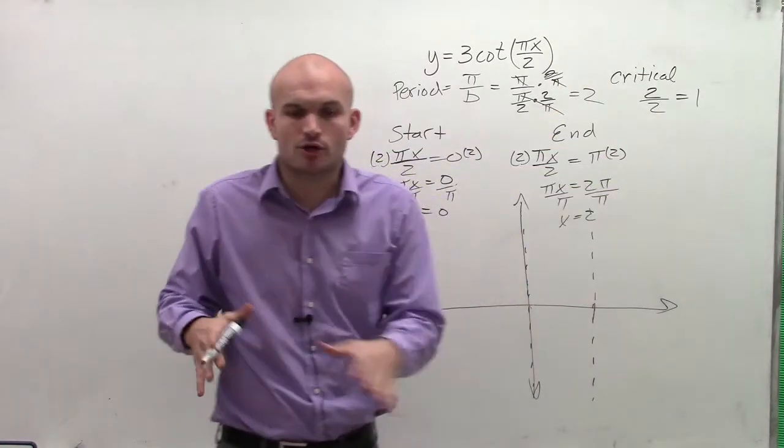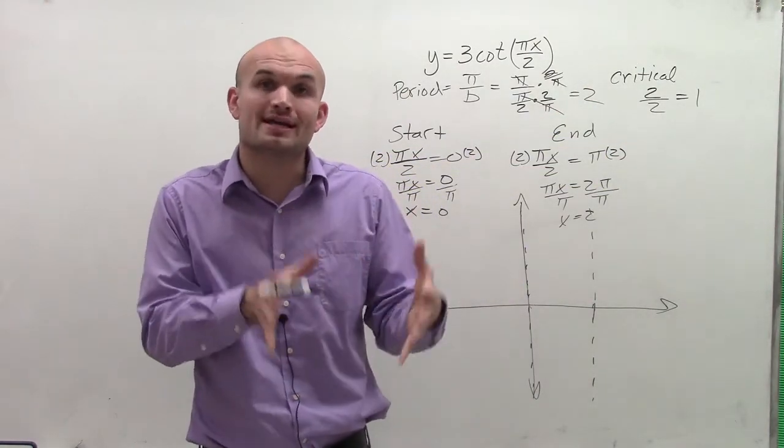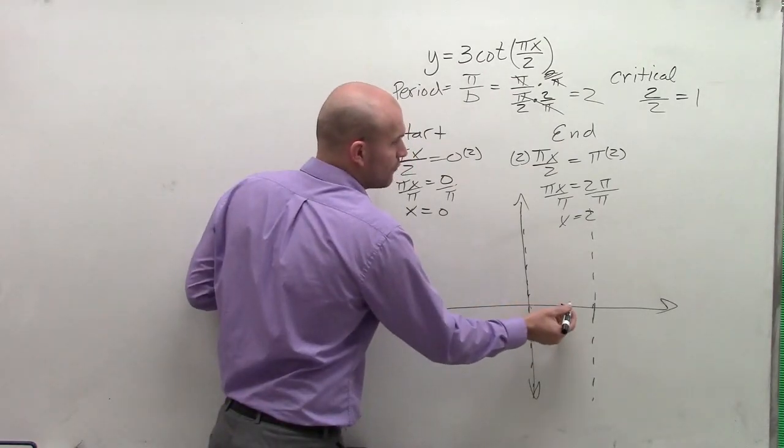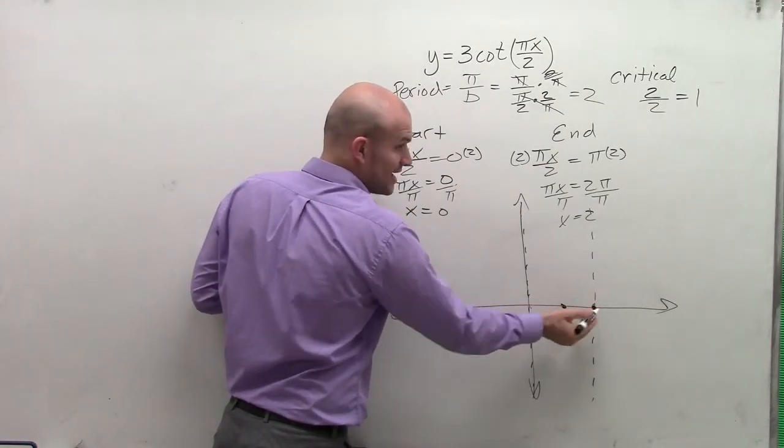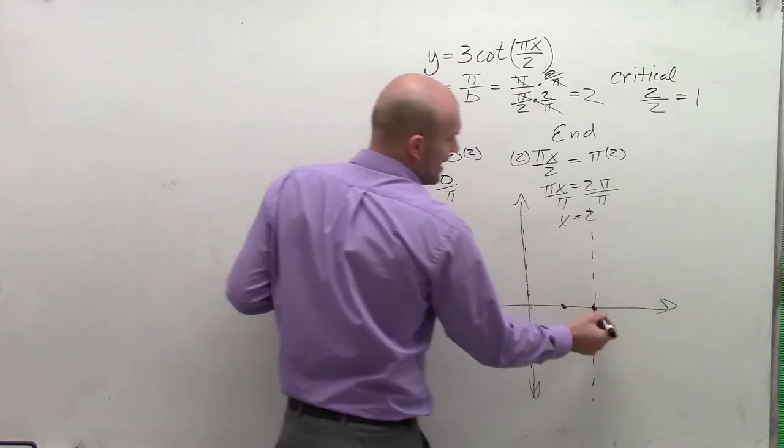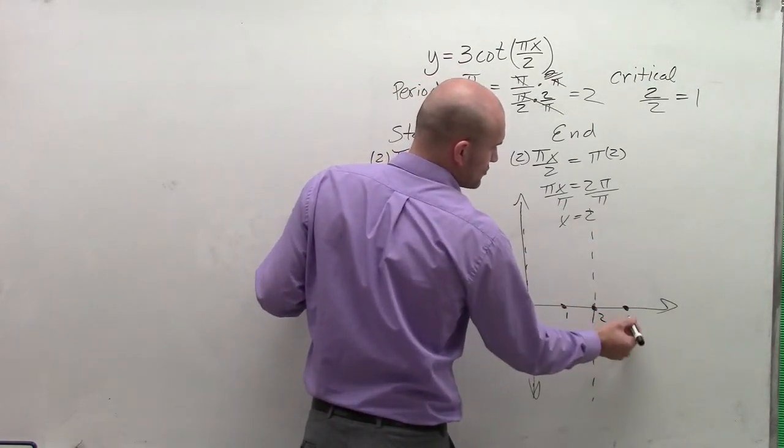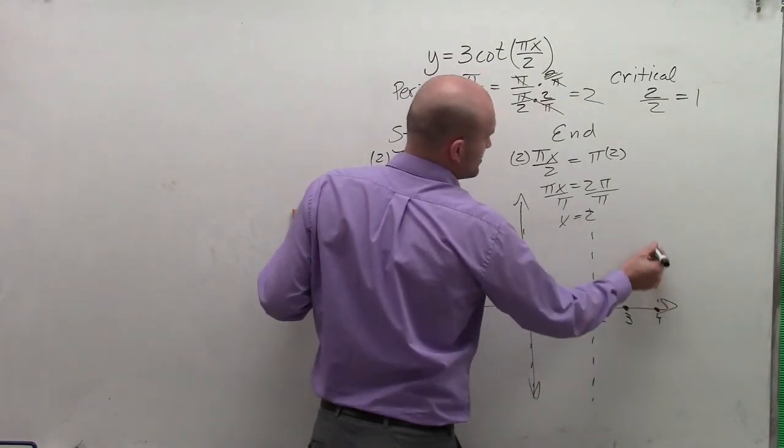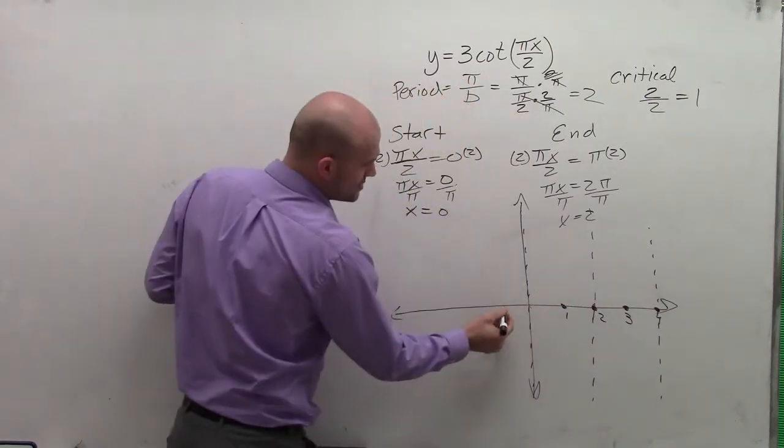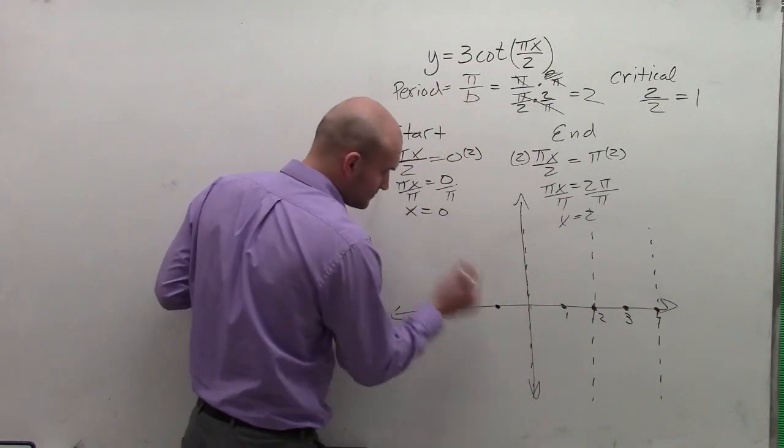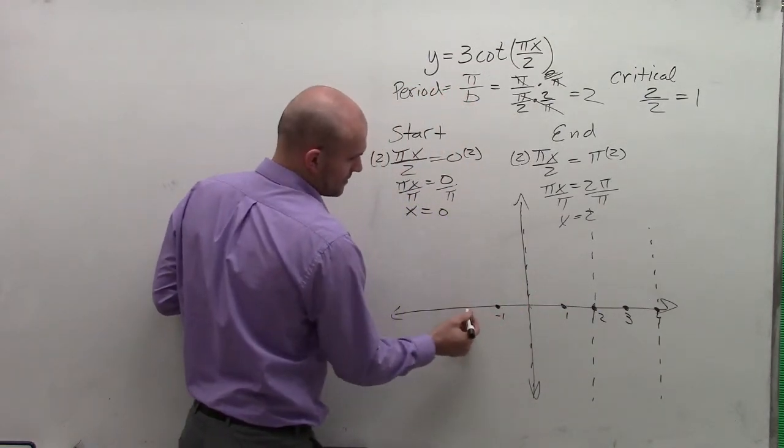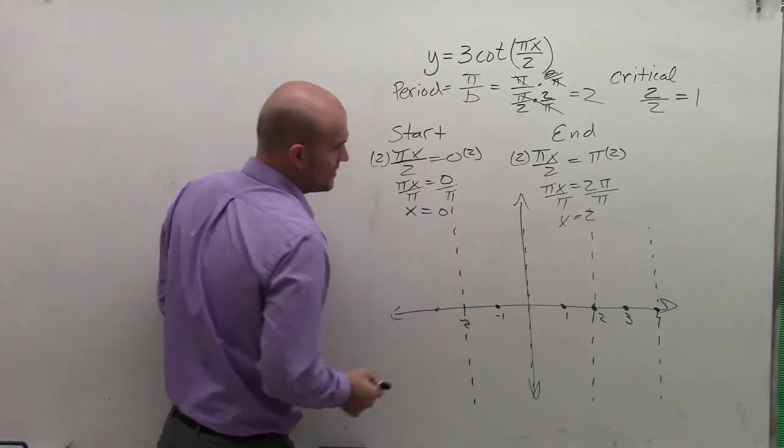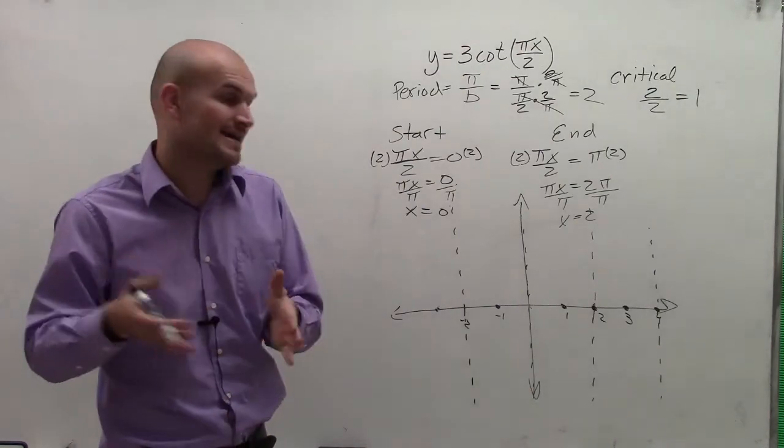Now we look at our critical points. Our critical point told us where our intercepts are and our asymptotes. If the first critical point is at 1, then if we add 1 again, that gives us 2, which is our next critical point, our asymptote. Add 1 again, we get 3, which will be an intercept. Add 1 again gives us 4, which is our next vertical asymptote. We can also do this in the negative direction, alternating between zeros and asymptotes.